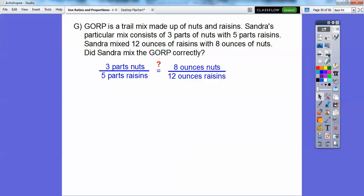So three parts nuts for every five parts raisins. Does that equal Sander's mix of eight ounces of nuts over 12 ounces of raisins? So we want to know, you guys, does three-fifths equal eight-twelfths? Well, we can check by cross multiplying, you guys. So if we cross multiply, does five times eight equal three times 12?